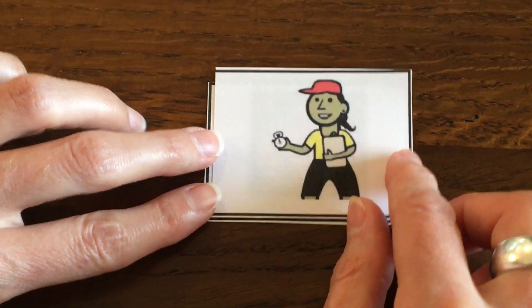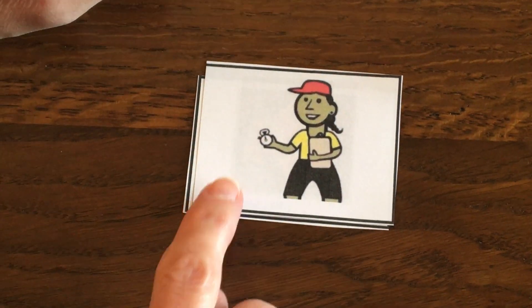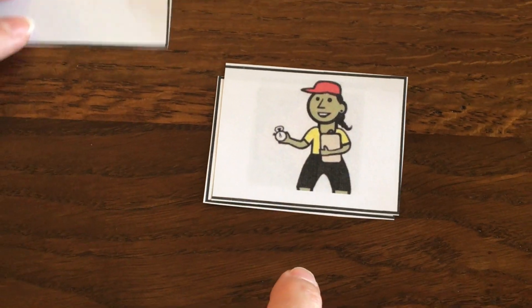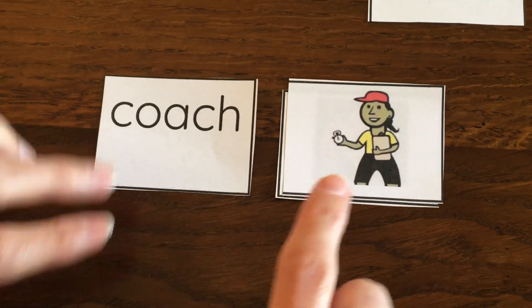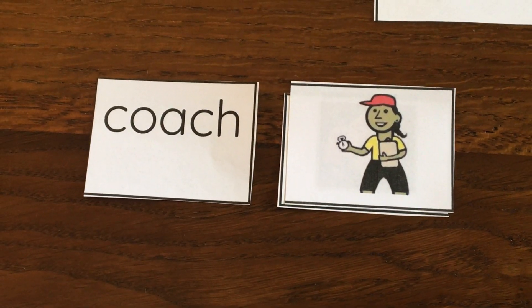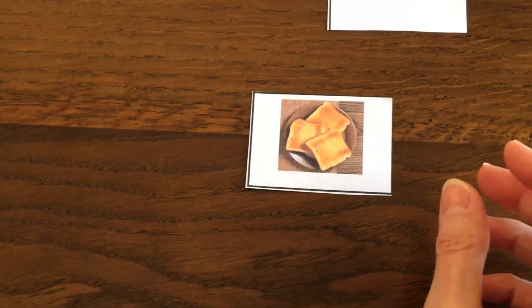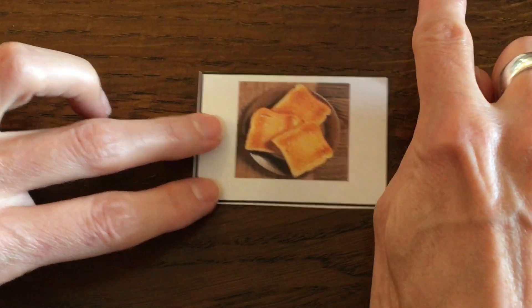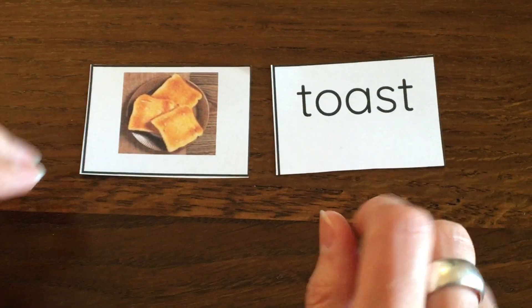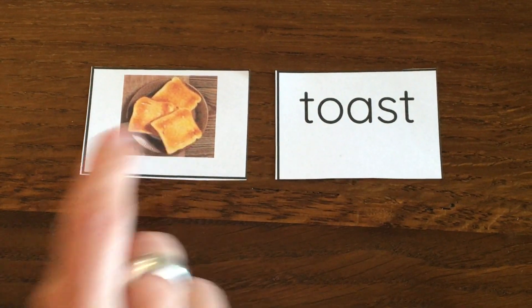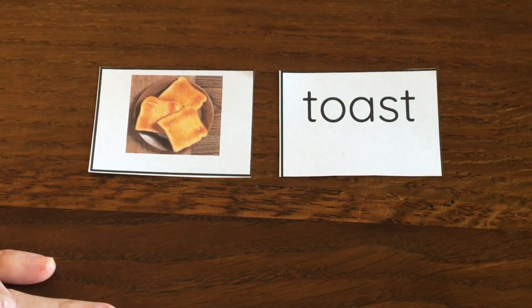This woman has a timer in her hand. I bet she's timing a race. She is a coach. Maybe she's coaching kids who are running or playing basketball. And our very last one. Toast. Here is some toast to eat for breakfast.